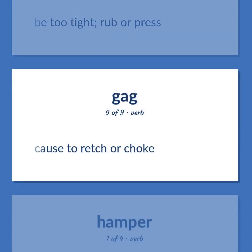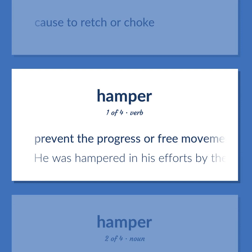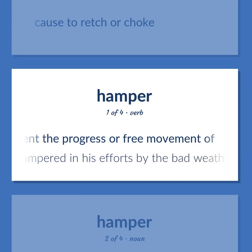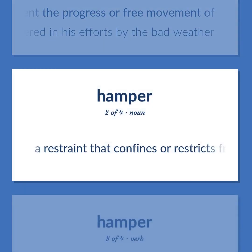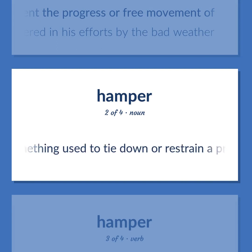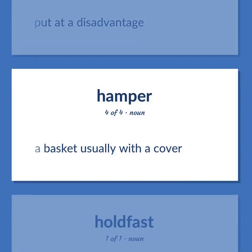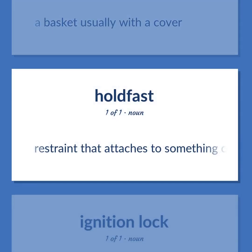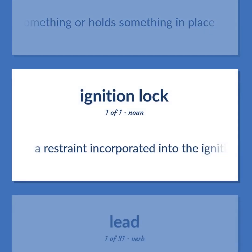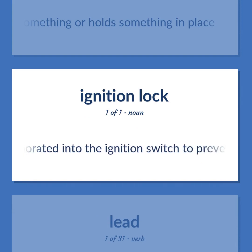Gag: Be too tight; rub or press. Cause to wretch or choke. Hamper: Prevent the progress or free movement of — he was hampered in his efforts by the bad weather. A restraint that confines or restricts freedom, especially something used to tie down or restrain a prisoner. Put at a disadvantage. A basket usually with a cover. Ignition interlock: Restraint incorporated into the ignition switch to prevent the use of a vehicle by persons who do not have the key.